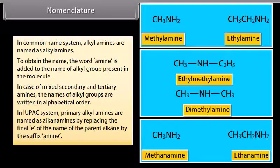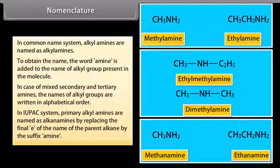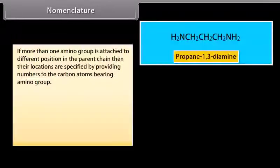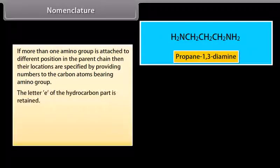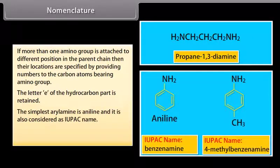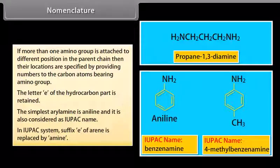In the IUPAC system, primary alkyl amines are named as alkanamines by replacing the final 'e' of the parent alkane name with the suffix 'amine'. If more than one amino group is attached at different positions in the parent chain, their locations are specified by numbering the carbon atoms bearing the amino group. The letter 'e' of the hydrocarbon part is retained. The simplest aryl amine is aniline, which is also considered its IUPAC name. In the IUPAC system, the suffix 'e' of arene is replaced by 'amine'.